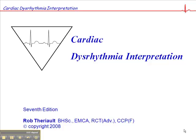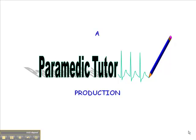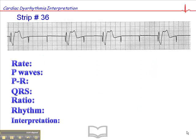Now we're on page 102, exercise 36, and this is a continuation from the last presentation. Again, we have a paced rhythm here where we have a problem — we have pacer spikes without QRSs. So let's start with the heart rate first.